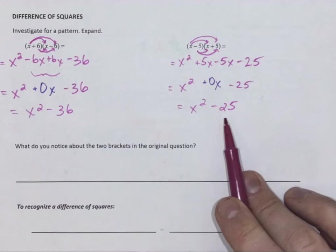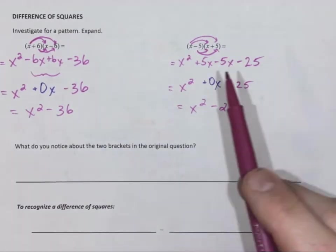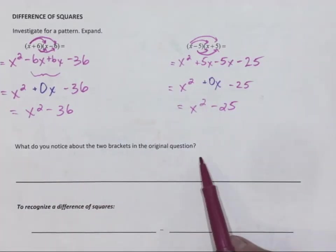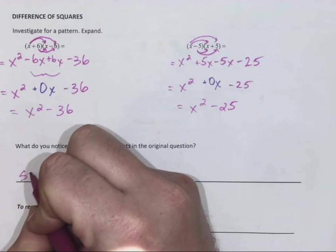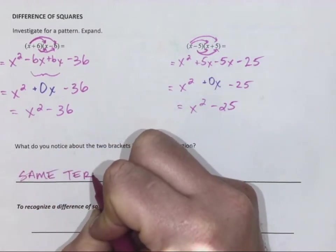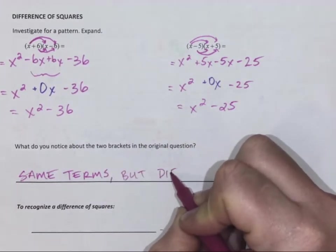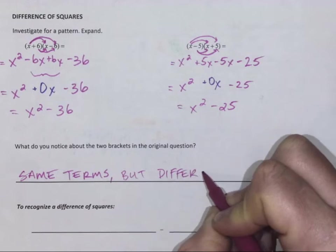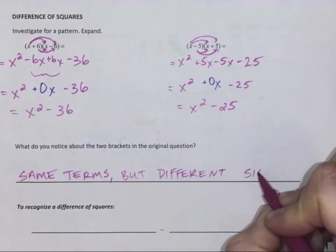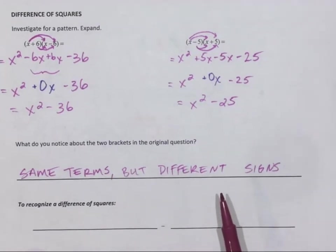So we can go right to the end. Now we start to notice a pattern. If we recognize, what do you notice about the two brackets in the original question? They have the same terms but different signs. And by different we mean opposite. So what does that tell us?